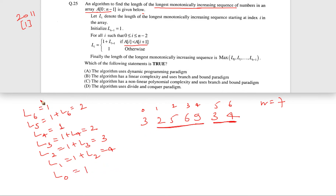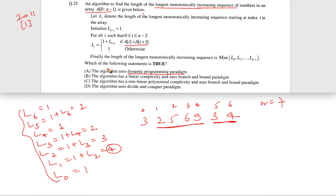For L[0], the condition A[i] < A[i+1] is violated because A[0] is bigger than A[1], so L[0] = 1. Taking the maximum of all L[0] through L[6], the maximum is 4, which is the length of the longest monotonically increasing sequence. We can clearly see this is a dynamic programming paradigm: the problem is split into sub-problems in a hierarchy, smaller sub-problems are solved first, and larger ones are solved using those results via a recurrence relation. The answer is option A.